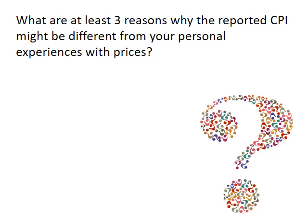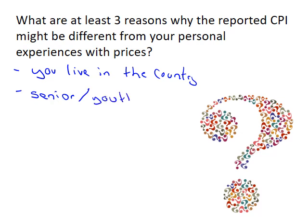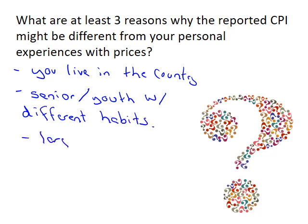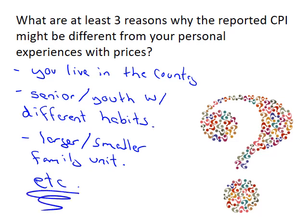What are at least three reasons why the reported CPI might differ from your personal experience with prices? First, CPI is designed for a typical urban consumer — if you live in the country, grow your own food, or face different rural gas prices, it may not apply to you. Second, if you're a senior or a youth with different spending habits, that typical basket may not relate to you. Third, if you have a larger or smaller family unit, your spending habits may differ from the typical consumer.